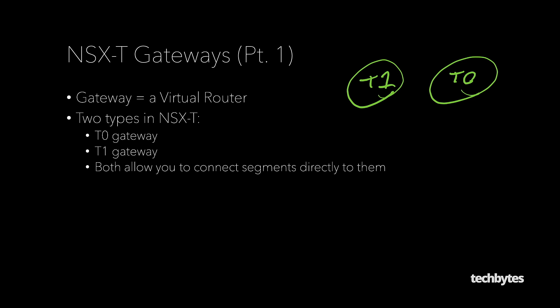Both of these gateways will allow you to connect segments directly to them. Whenever you hear the terminology T1 or T0 gateways, think overlay. We can never connect a VLAN-backed segment to a gateway, because the VLAN-backed segment is relying on regular VLAN configuration on the physical network — it still has its default gateway on the physical network. So whenever I talk about connecting segments to a gateway, it will always be an overlay segment.